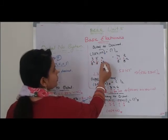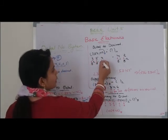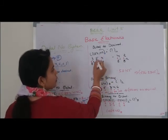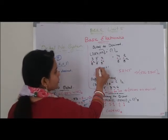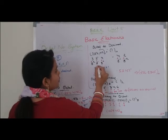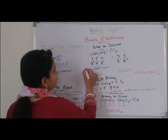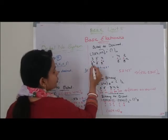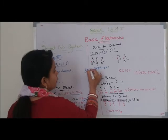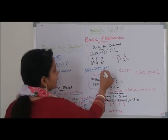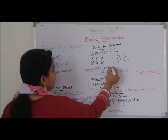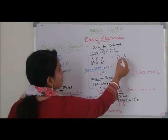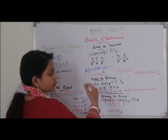उसी तरह octal to decimal में हम 8 to the power 0, 8 to the power 1, 8 to the power 2 से multiply करेंगे और add कर देंगे। For example: 4 into 8 to the power 0 = 4, plus 5 into 8 to the power 1 = 40, plus 3 into 8 to the power 2 = 192. Solving this we get 236 as the decimal whole number part.